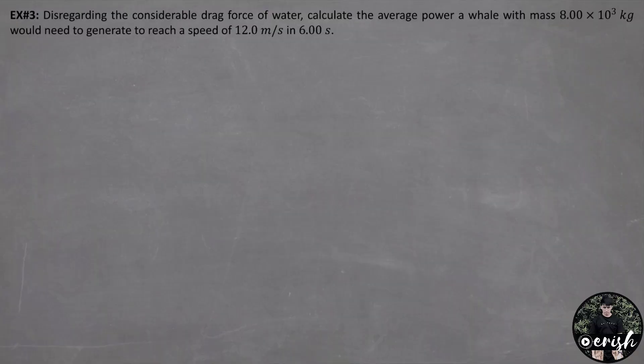Example number 3. Disregarding the considerable drag force of water, calculate the average power of a whale with a mass of 8 times 10 raised to 3 kilograms would need to generate to reach a speed of 12 meters per second in 6 seconds.